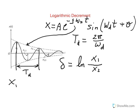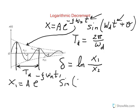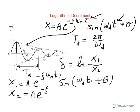Let's say what X1 is. X1 happens at time T1, so in place of t I put T1. That gives: X1 = A · e^(−ζω_N · T1) · sin(ω_D · T1 + θ). Then X2 is the same thing, but this time at time T2: X2 = A · e^(−ζω_N · T2) · sin(ω_D · T2 + θ).